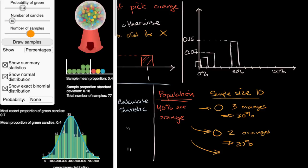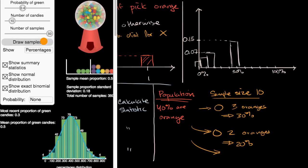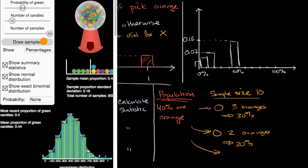And if we just wanna do a ton more samples, I'll go all the way to drawing 50 samples at a time. So let me just keep increasing this. Notice, we have 17 samples now where we had 0% that are green. We have 91 of the 2,200 samples where 10% were green, where one out of the 10 in our sample were green.